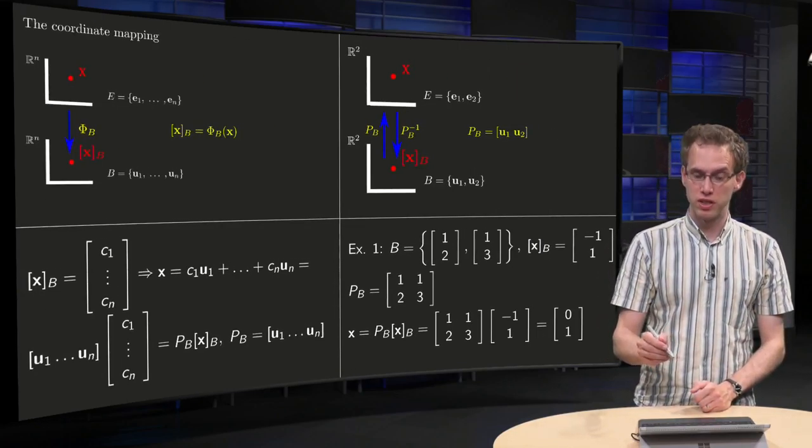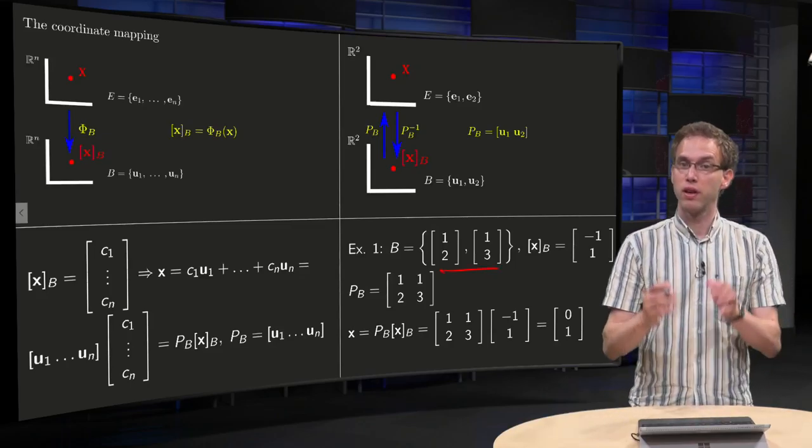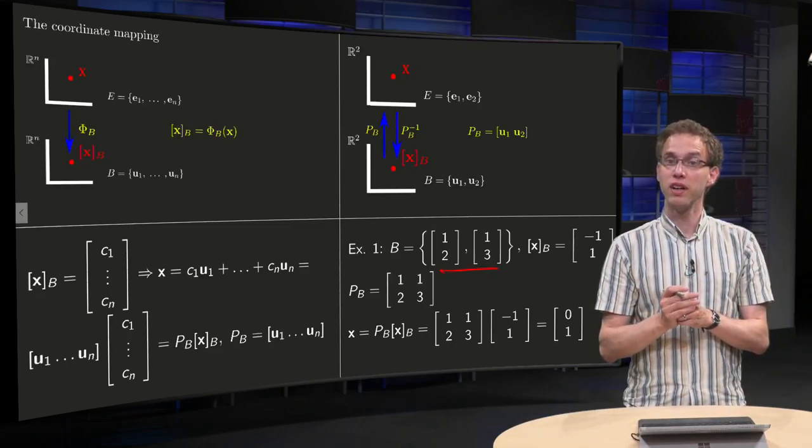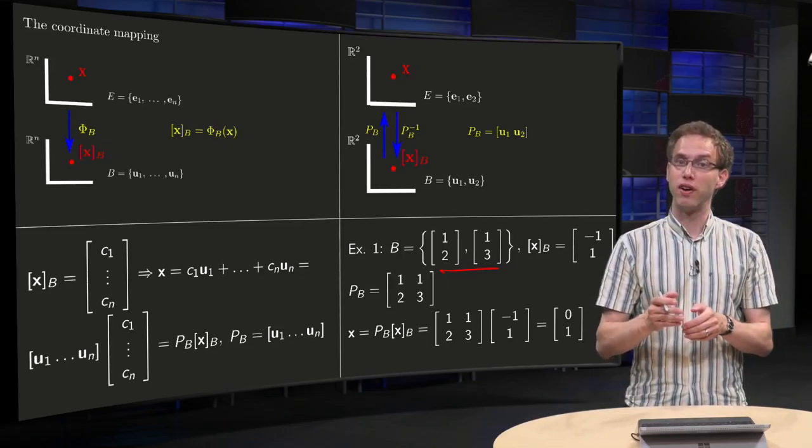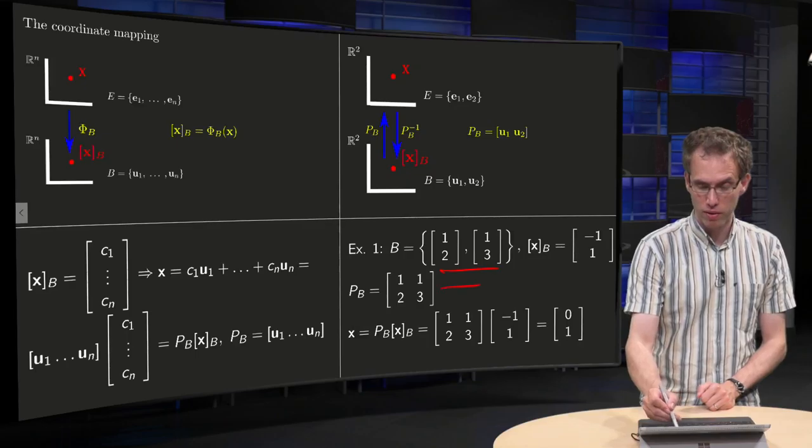Suppose our basis B contains the vectors [1,2] and [1,3]. How do we find our PB? Well, that's easy. You just plug the vectors into a matrix, so there you have your PB.